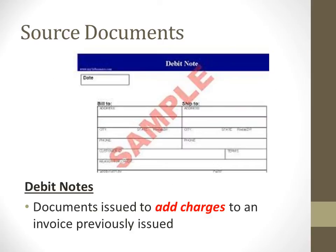The next source document is debit notes. These are documents issued to add charges to an invoice previously issued. A typical example: if you previously gave a customer a 20% discount and then decide to reduce that discount to 10%, it means the customer should owe you more. Because previously you would have given an invoice, now you need to add more charges, so you send a debit note instead of another invoice. Debit notes are to add charges to an invoice that was already previously issued.